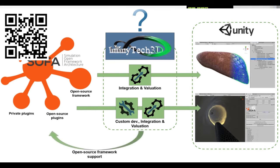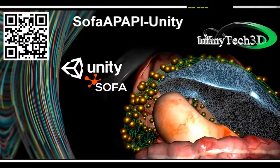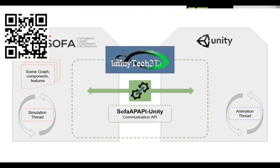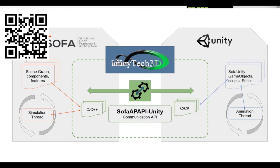How it is done inside Unity: on one side you have SOFA with all its components, data, scene graph, and simulation thread. On the other side there is Unity with its animation thread. In between there is an API communication layer made of C++ code that wraps the SOFA objects, and also C# code that maps SOFA objects inside Unity as game objects and scripts, in order to access them inside Unity's animation thread.